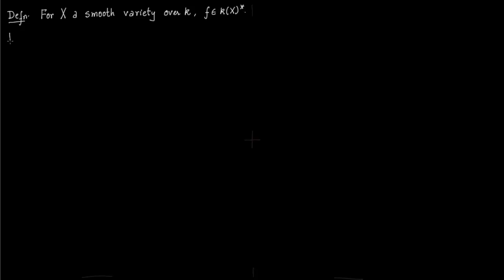So the divisor of zeros of f is a formal sum. It is a divisor of f. You basically take all the codimension-1 subvarieties of X.